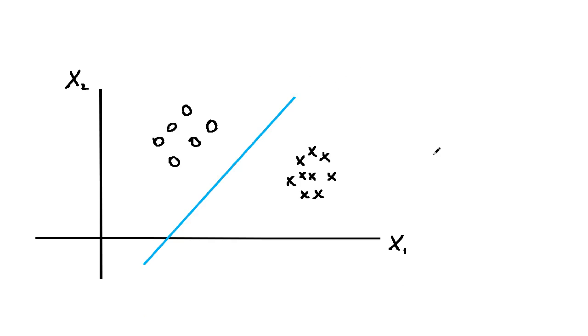If the xi's are separable like this by a line when p equals 2, or by a hyperplane more generally, then we can use such a line to separate the two classes and classify any new point depending on which side of the line the point falls on.